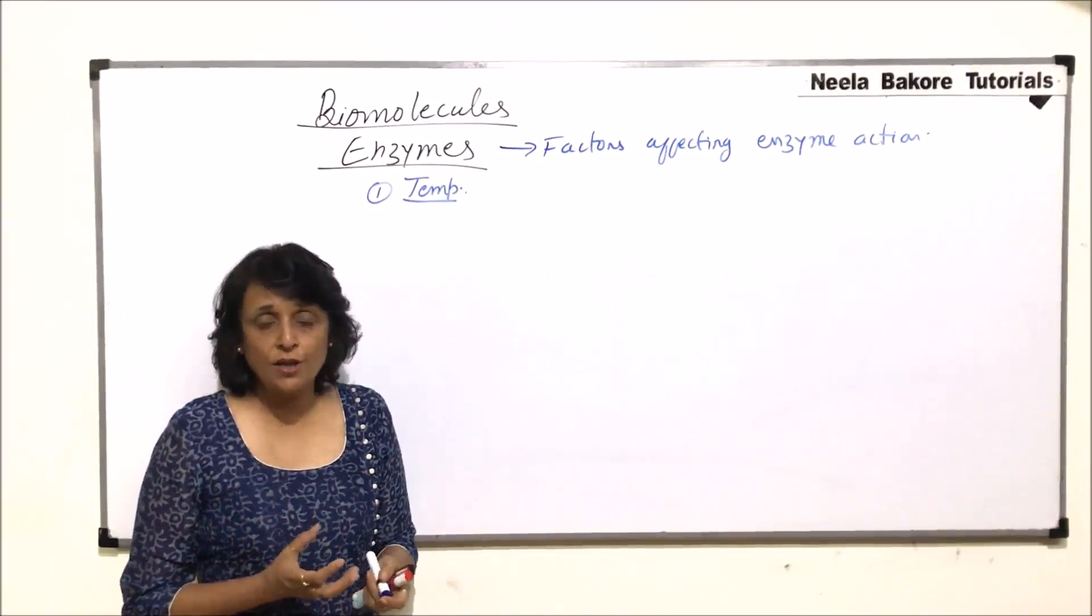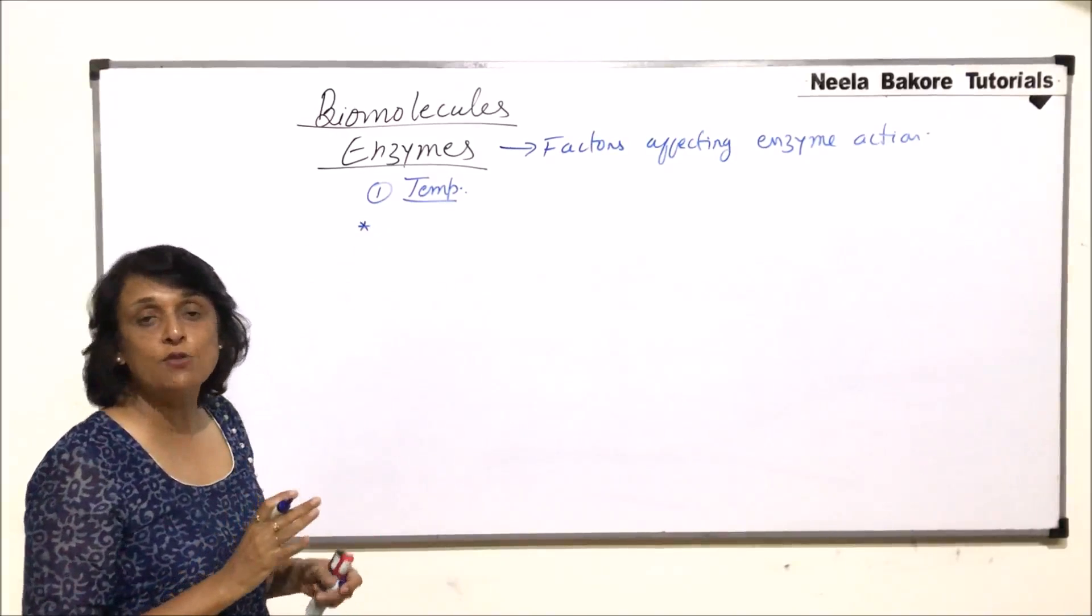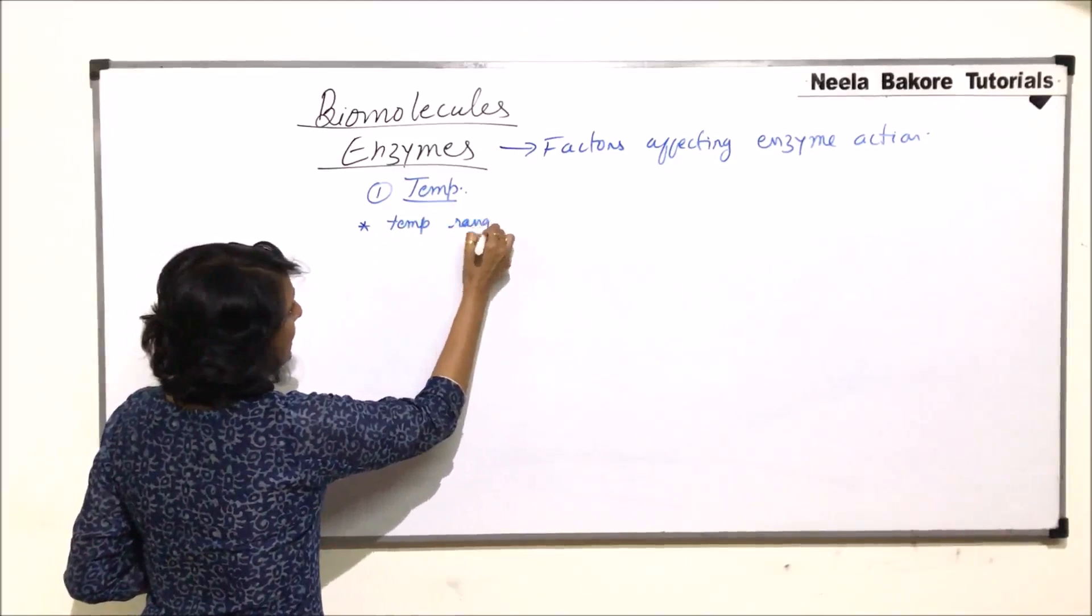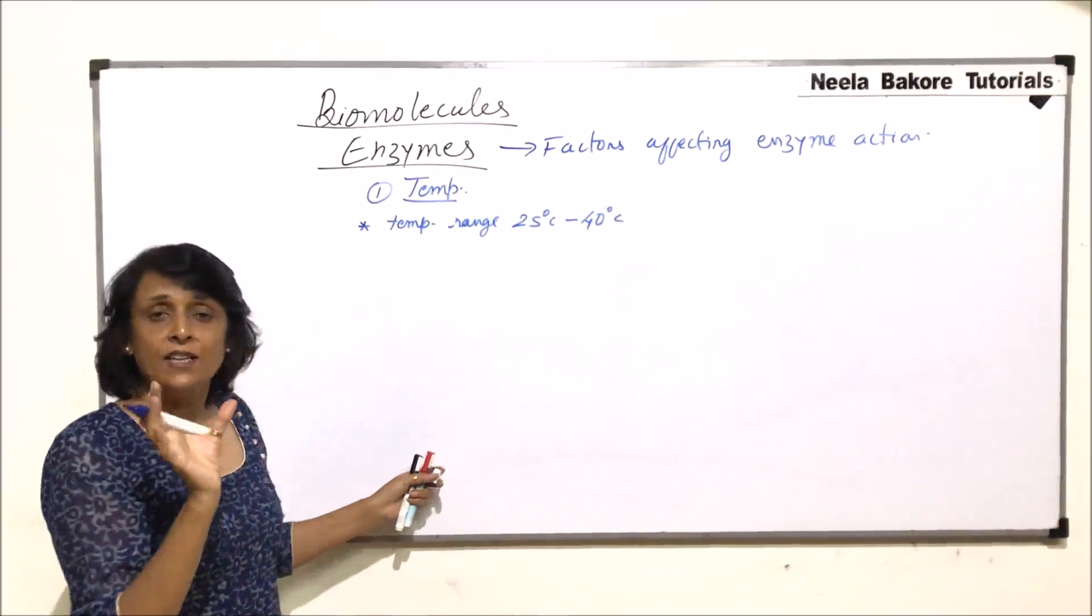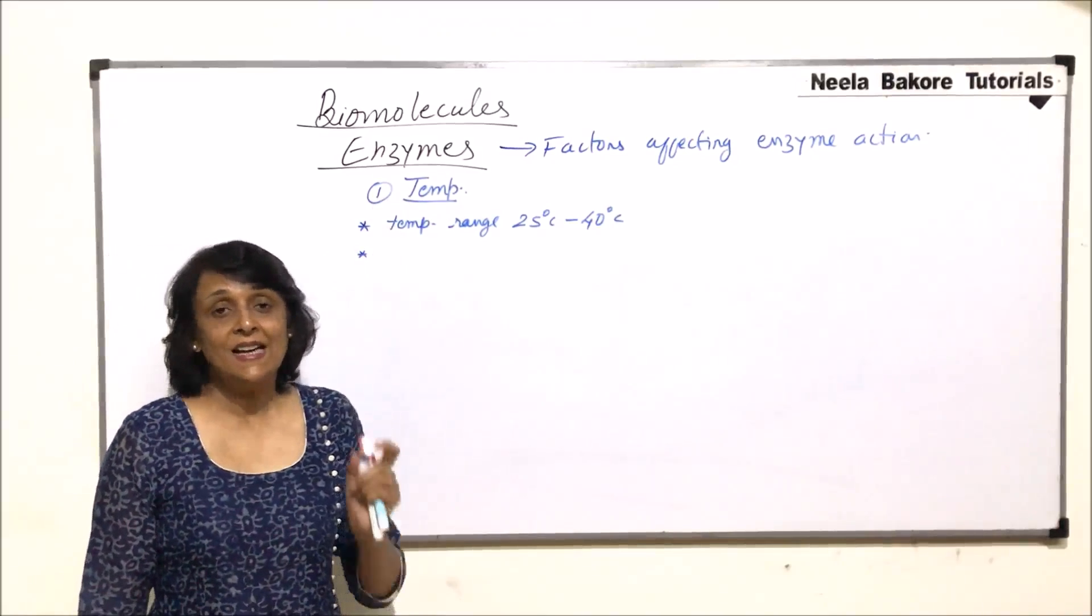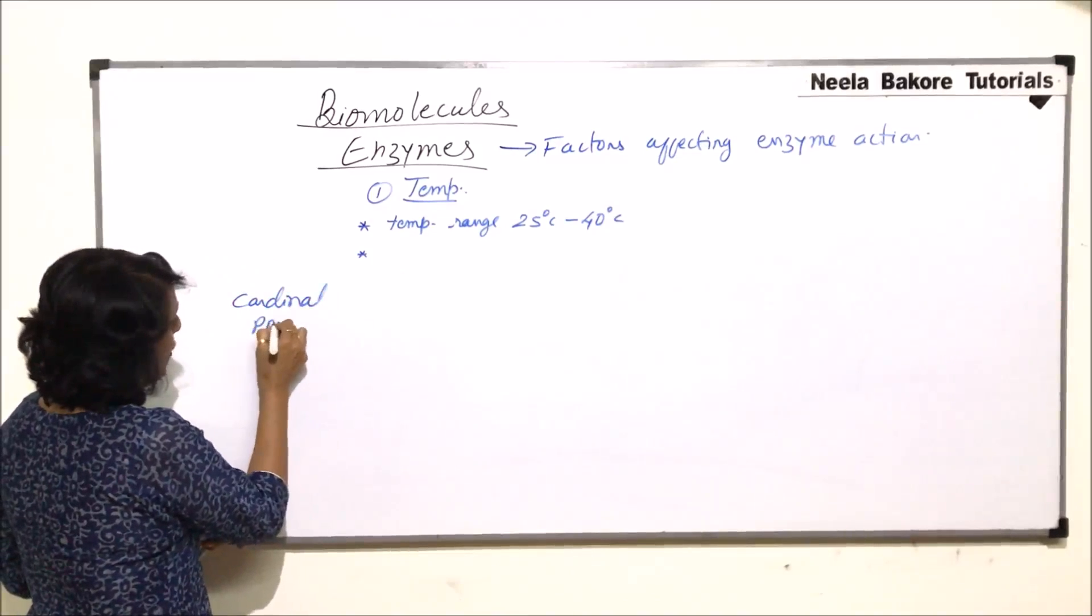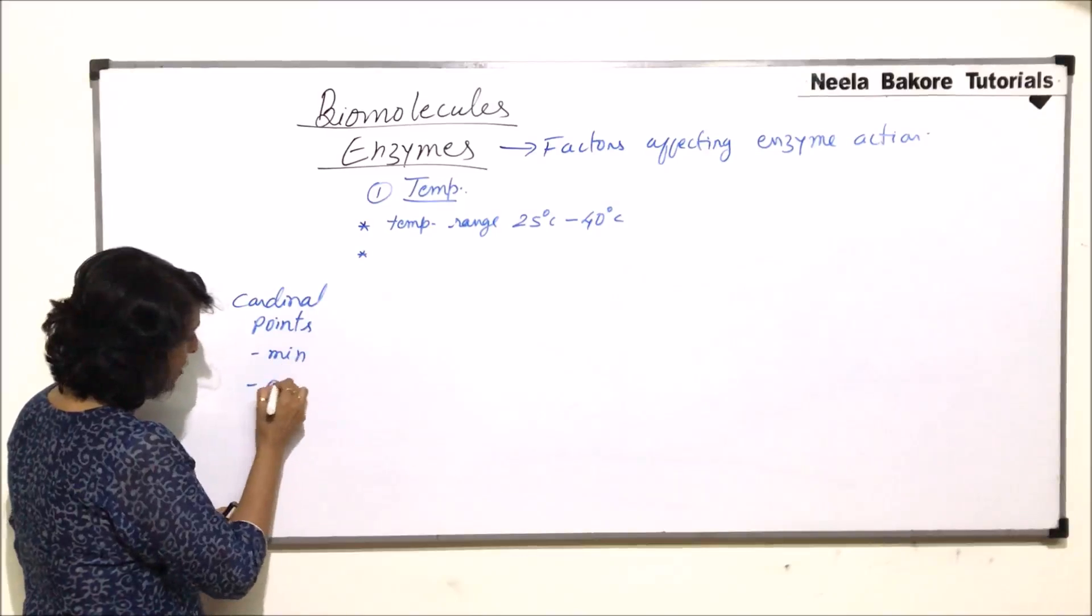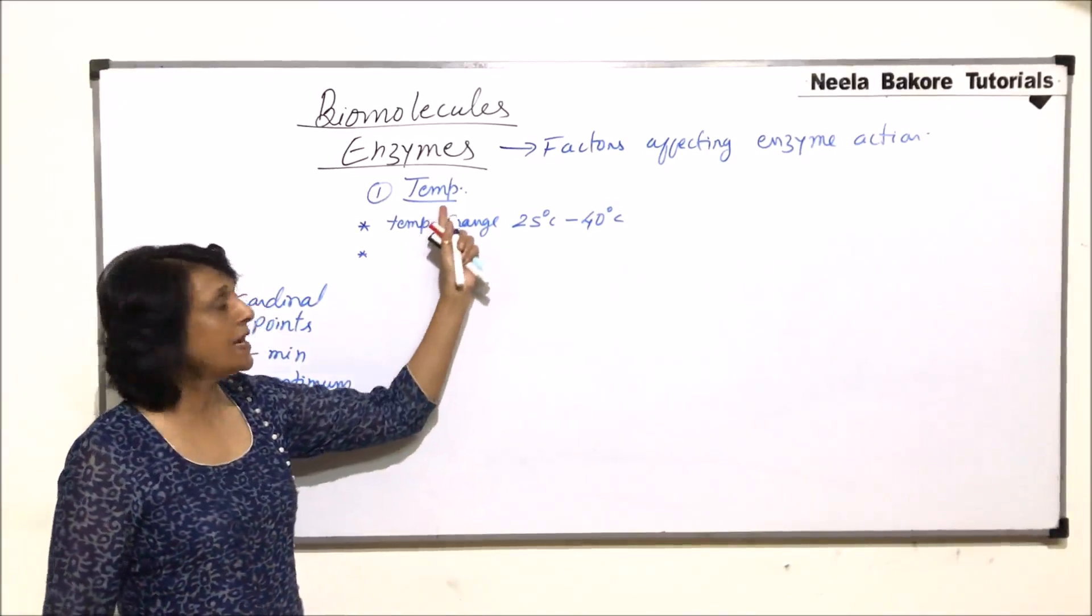With increase in temperature, the enzymatic activity is going to get affected. But let us first talk about general temperature range where most of the enzymes are working. The temperature range varies from 25 degrees Celsius to 40 degrees Celsius. This is the range where most of the enzymes work. Whenever we talk about a factor, we have to understand cardinal points. For any factor, cardinal points are three: one minimum, then optimum, and maximum.